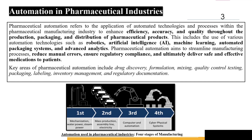Automation in pharmaceutical industries. In the pharmaceutical industries, automation is actually being used to enhance efficiency, accuracy, and quality throughout processes such as production, packaging, and distribution of pharmaceutical products. This includes various automation technologies like robotics, artificial intelligence, machine learning, automated packaging systems, and advanced analytics. Key areas of pharmaceutical automation include drug discovery, formulation, mixing, quality control testing, packaging, labeling, inventory control, and regulatory documentation.